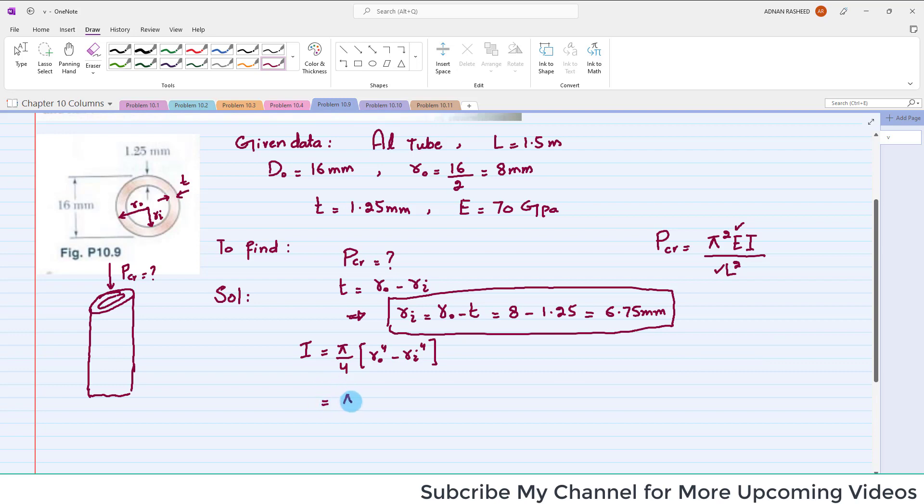Now you have all the values, you can put it in the formula. This is pi by 4, and this will be R naught, R naught is 8, so 8 to the power 4, minus 6.75 to the power 4. When you solve this, this will be equal to 1.586 times 10 to the power 3 millimeters to the fourth.